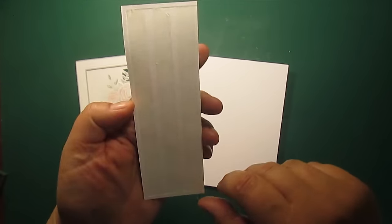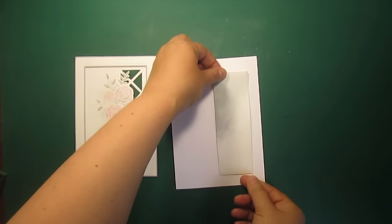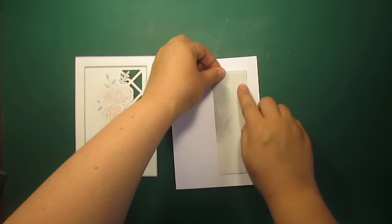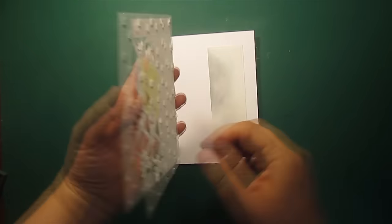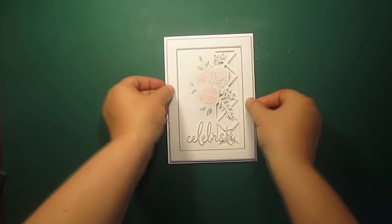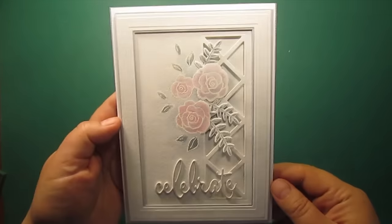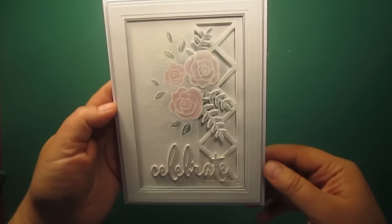Now I'm attaching this strip to my 5x7 card base. Then I'm attaching the panel on top with the foam squares. The card is now ready.